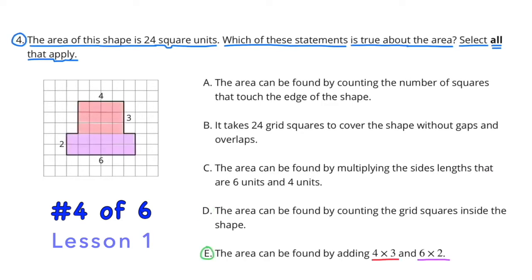E applies because the area can be found by adding 4 times 3 and 6 times 2. It's kind of like what I was talking about in example C, multiplying the base times the height of quadrilaterals. I have identified 2 quadrilaterals within this shape.